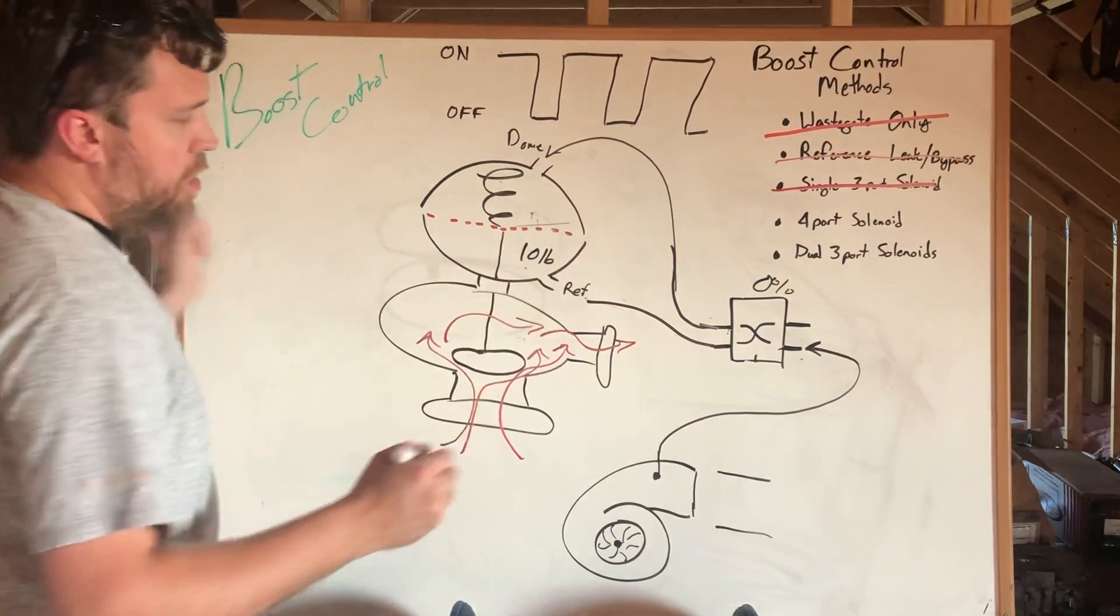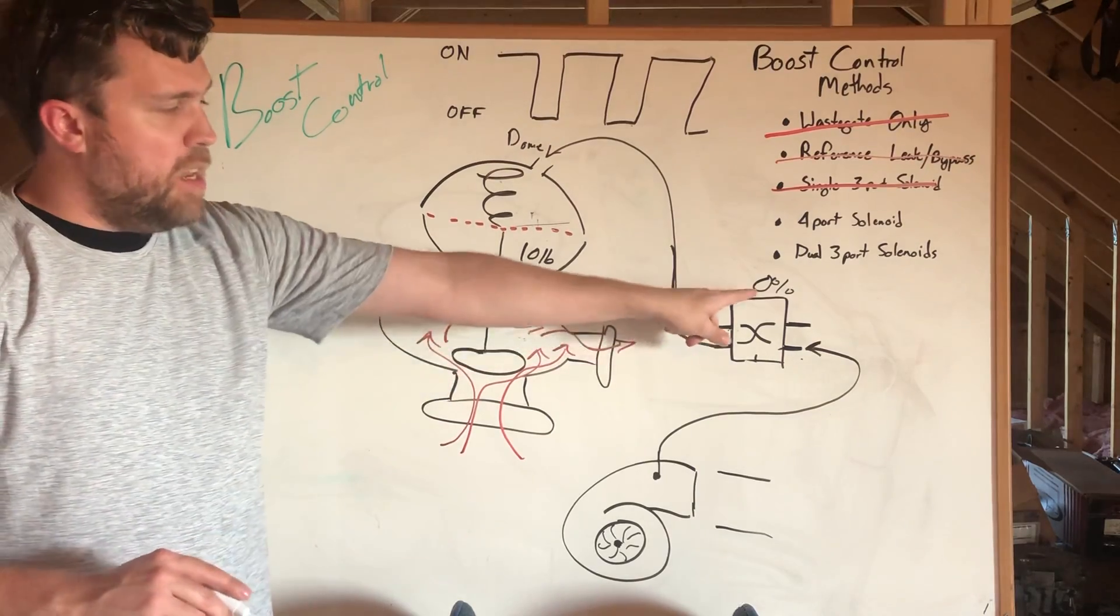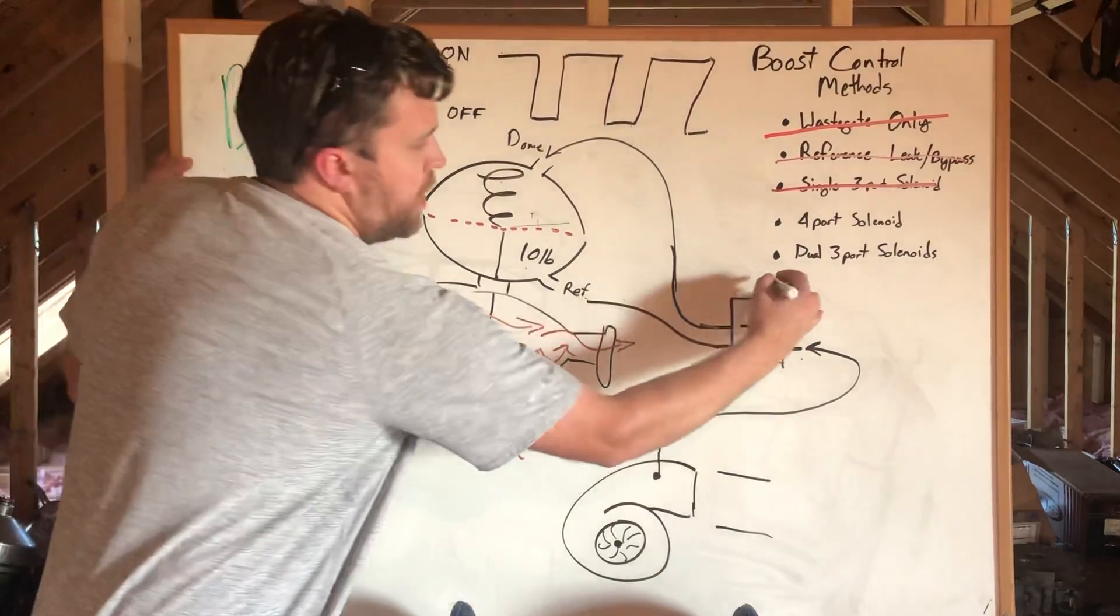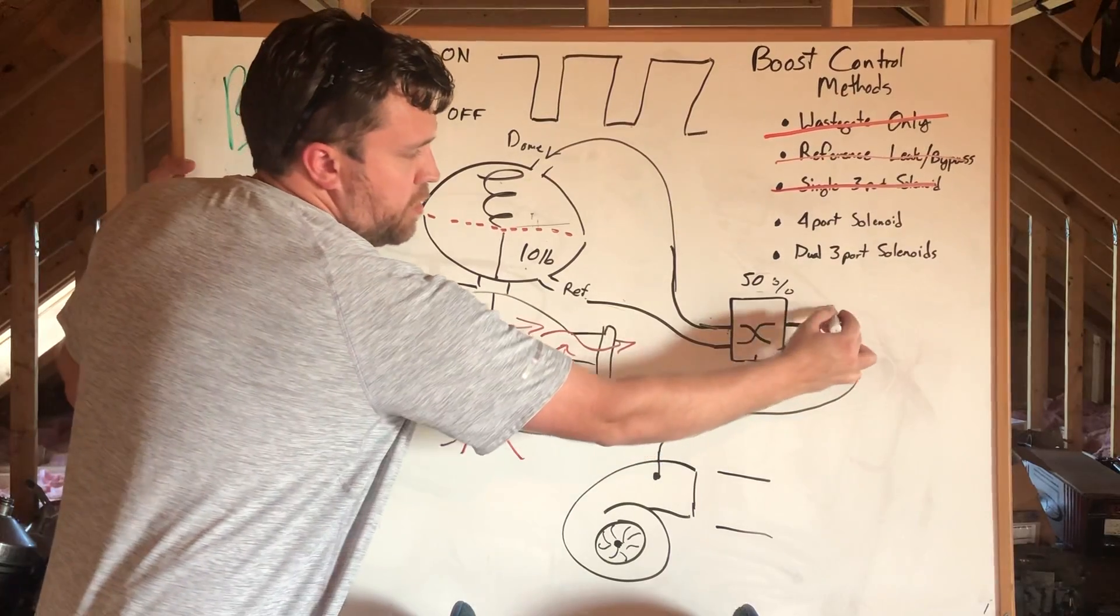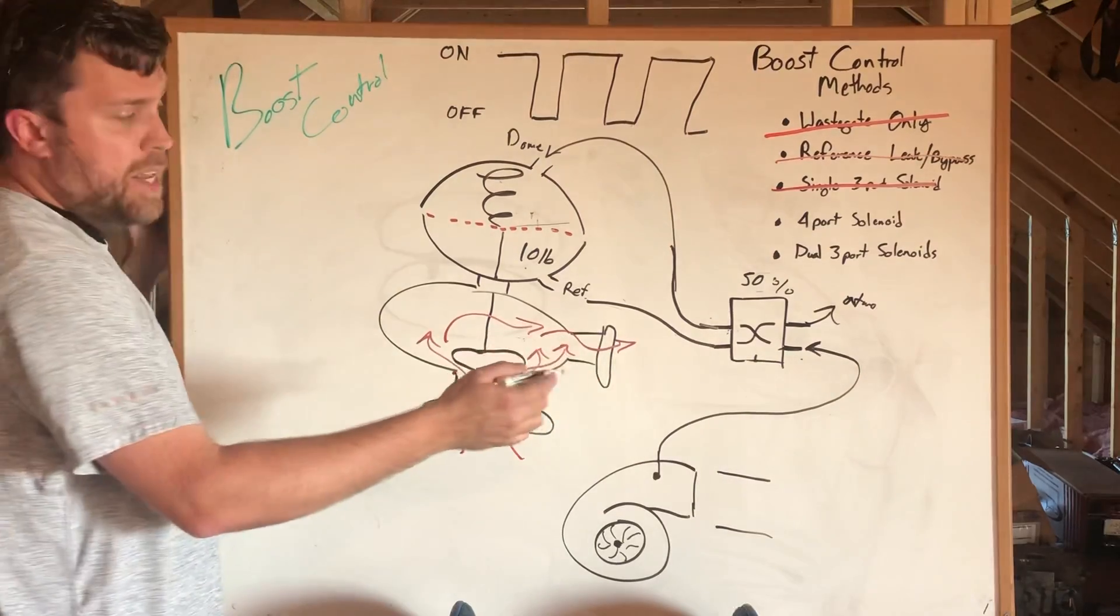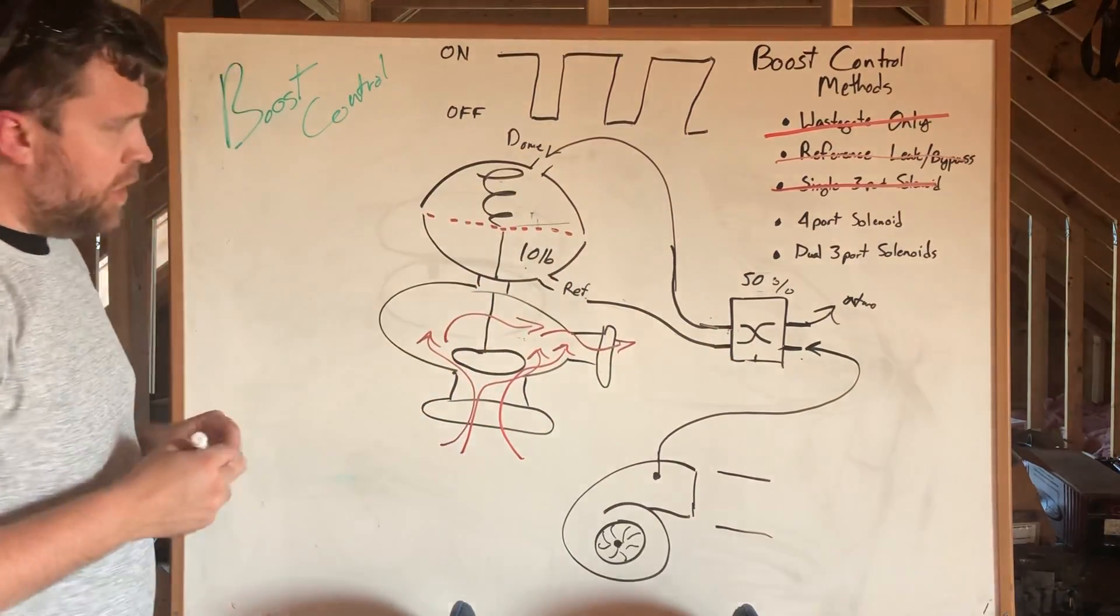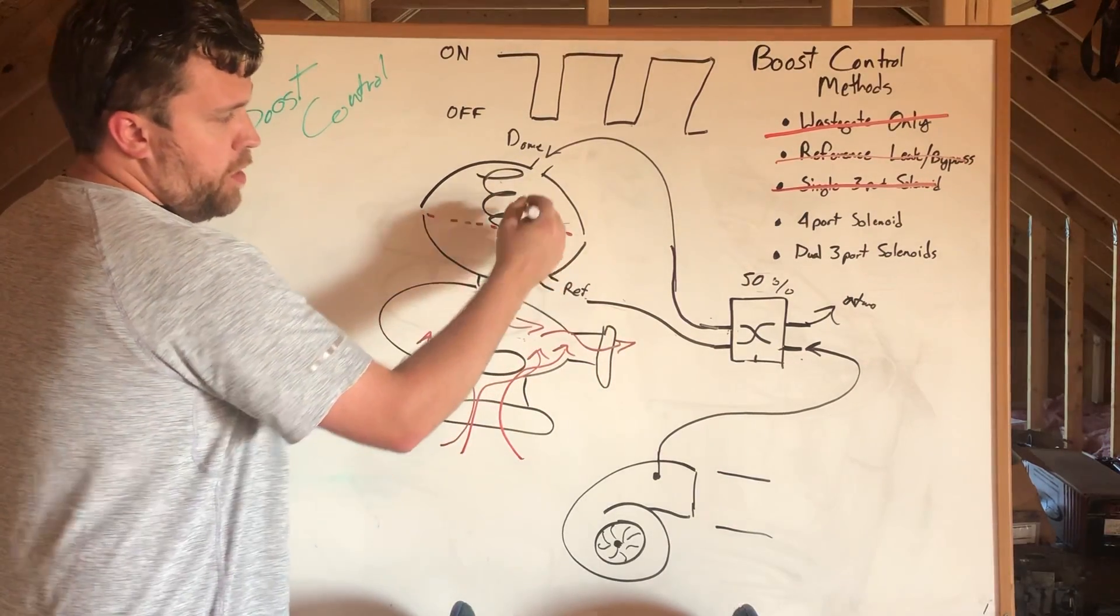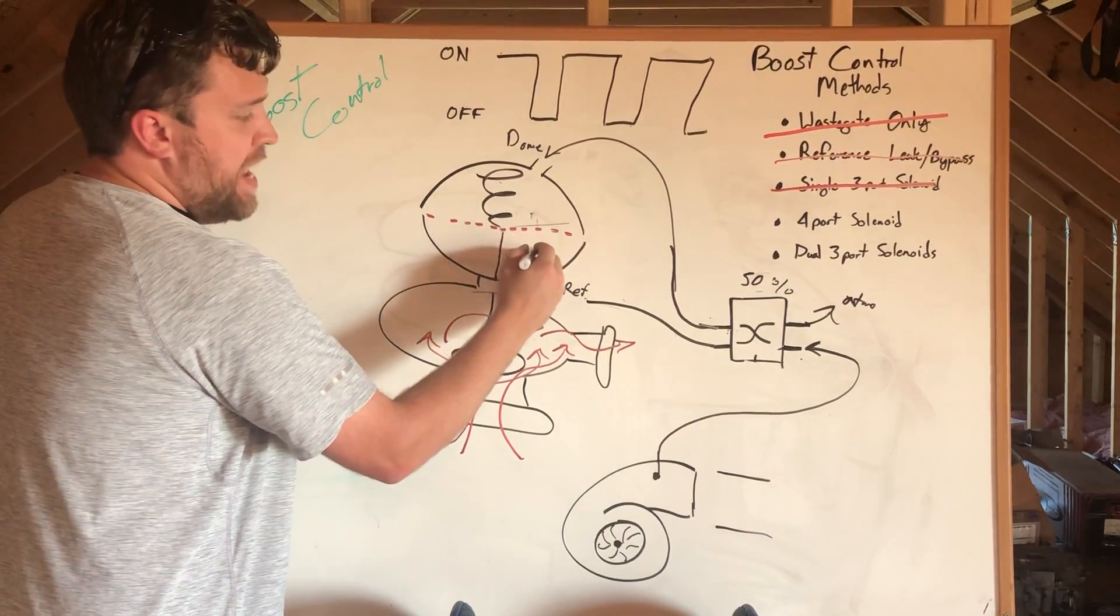If you run 10 pounds on the gate, as you command more duty cycle—let's skip this to 50 percent—what we're effectively doing is bleeding off reference pressure to atmosphere while simultaneously adding pressure to the dome. What this means is we're going to invert them: we're going to take away reference pressure and put a bunch on the top.